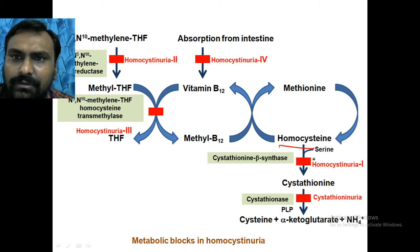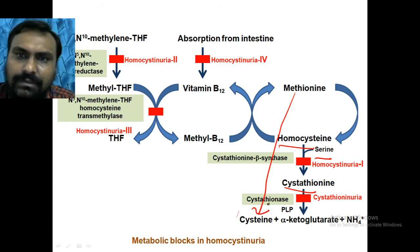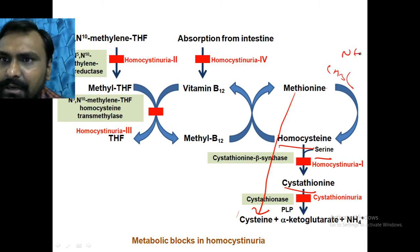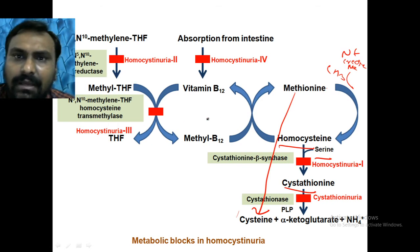Methionine is converted to homocysteine, and this homocysteine with the help of serine is converted to cystathionine, and ultimately the sulfur group of methionine is transferred to cysteine — that is called the trans-sulfuration reaction. Methionine also donates its methyl group to compounds like norepinephrine to form epinephrine, or guanidinoacetate to form creatine, or to form melatonin and choline.